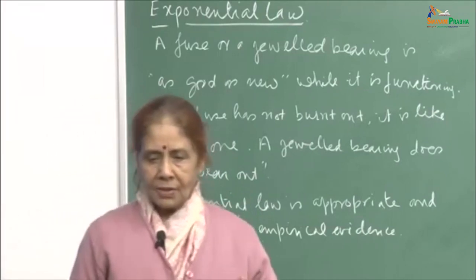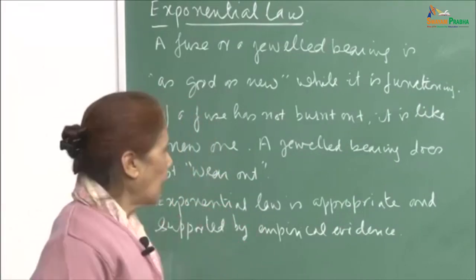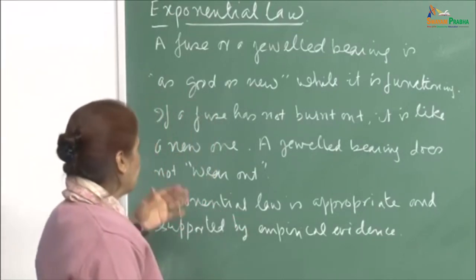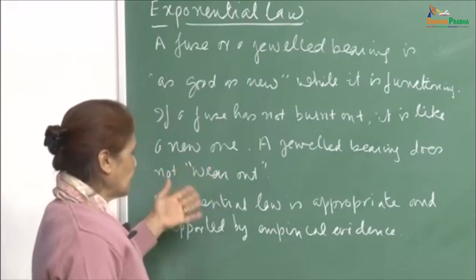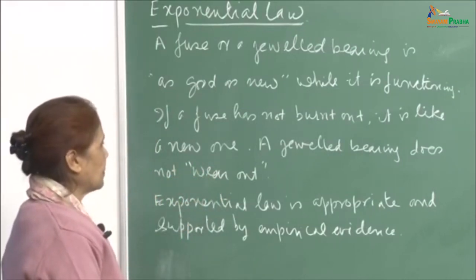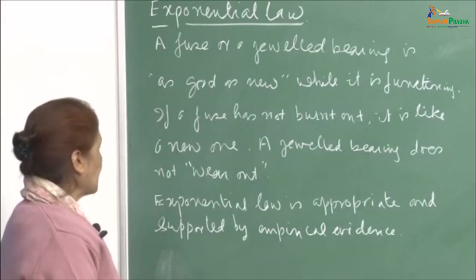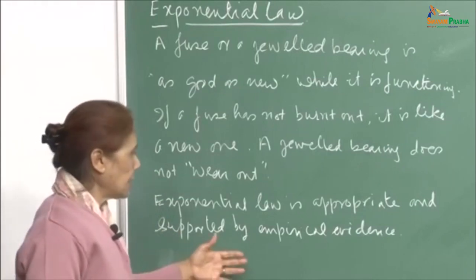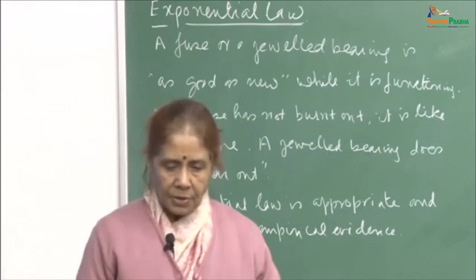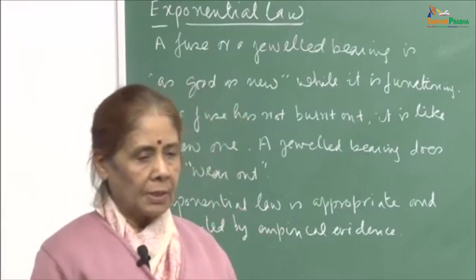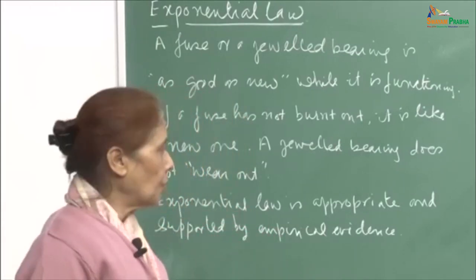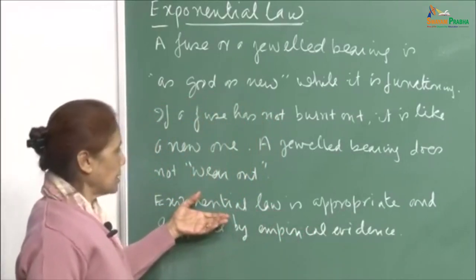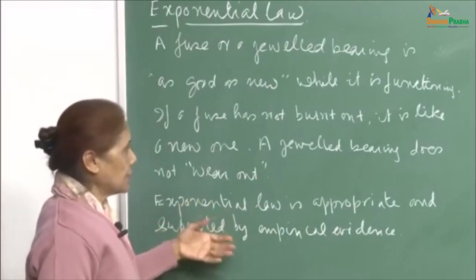It does not matter how long they have been functioning — they are as good as new. If a fuse has not burnt out, it is like a new one. A jeweled bearing does not wear out. For such components the exponential law is appropriate and is supported by empirical evidence: when you collect data for such components, how long it takes for them to fail, and then fitting the curve to the data, it turns out the exponential law is appropriate.